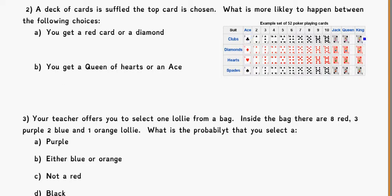They go from ace all the way up to king. The jack, the queen, and the king. These are the ones that are considered face cards because they have a face on them. And then there's a total of 52. So a total of 52 cards in a regular deck. So if I shuffle up a deck of cards and I take the top card, I choose the top card, what is more likely to happen between the following choices?